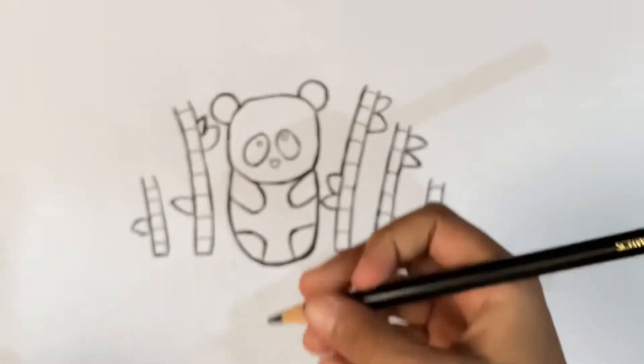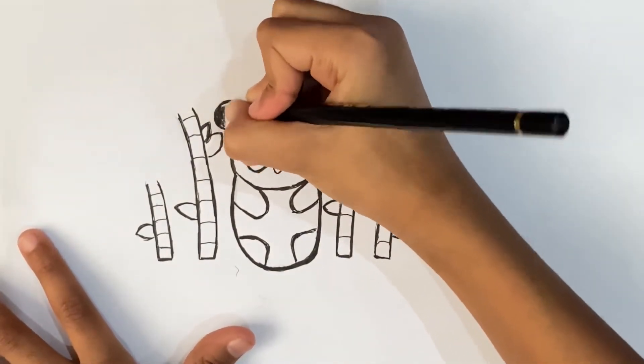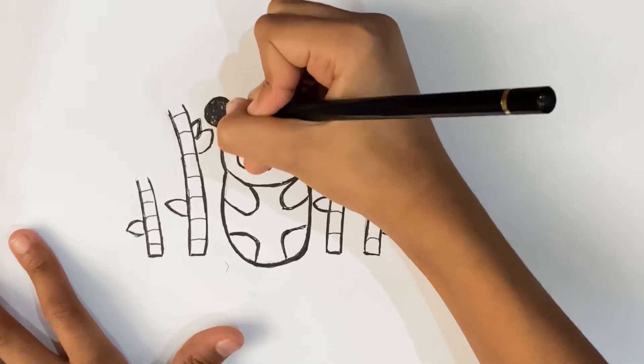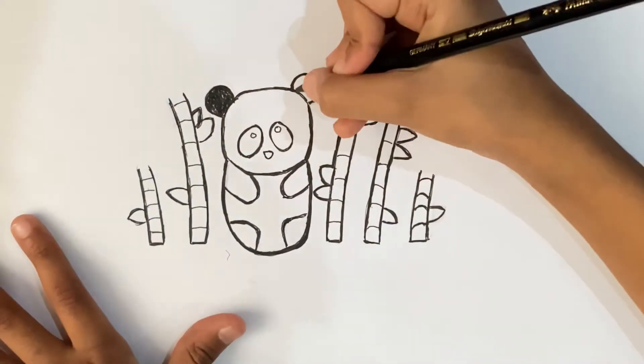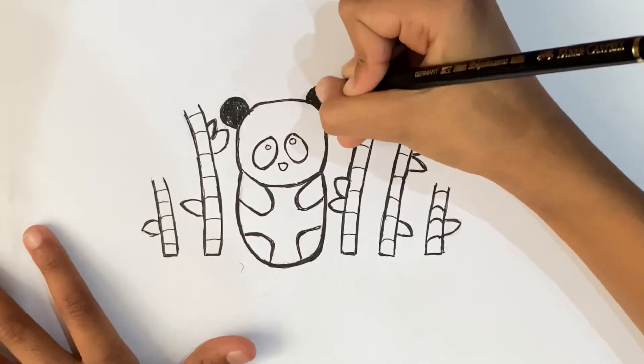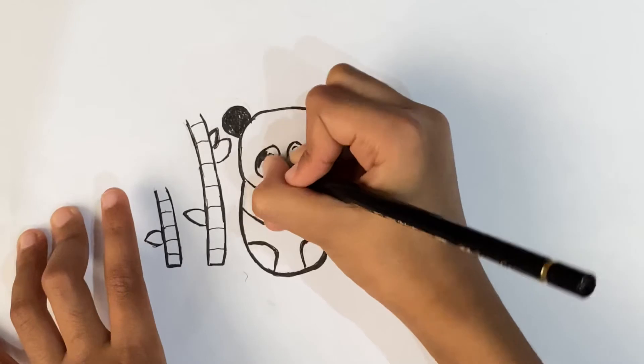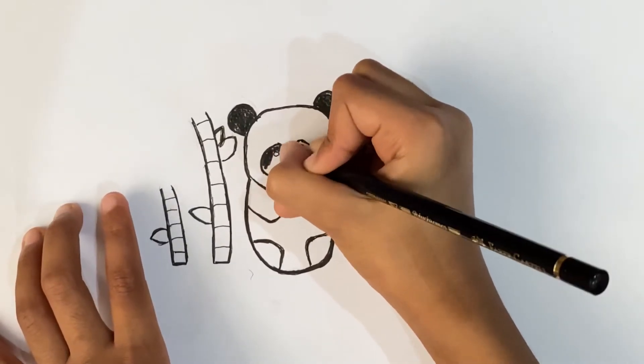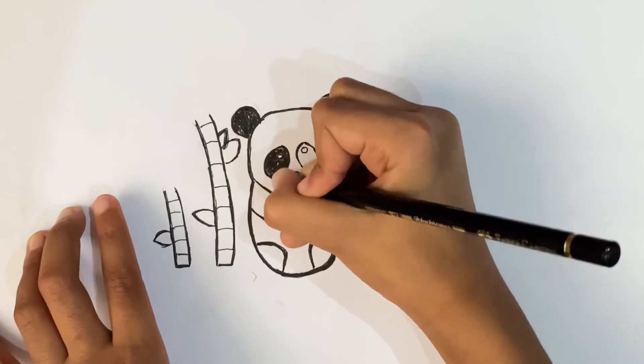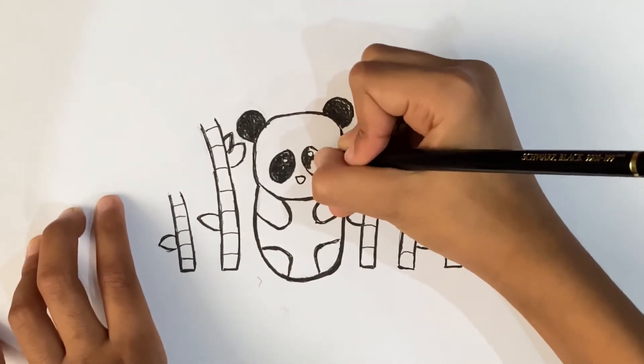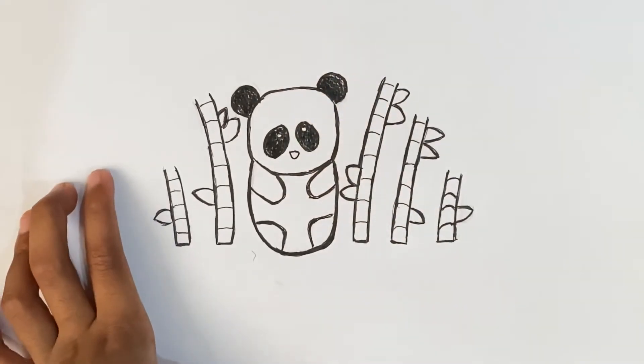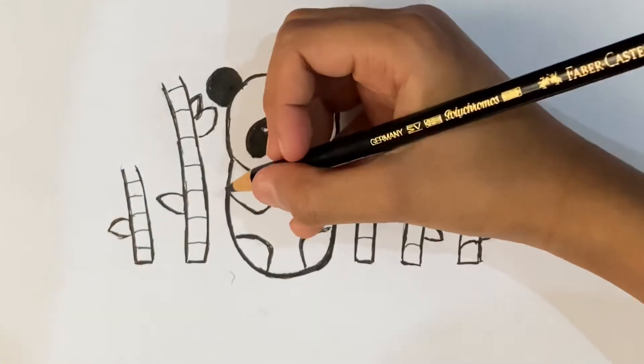First, let's take our black and color in the ears. Now color in the eyes except for the small circle. Next, let's color in the arms.